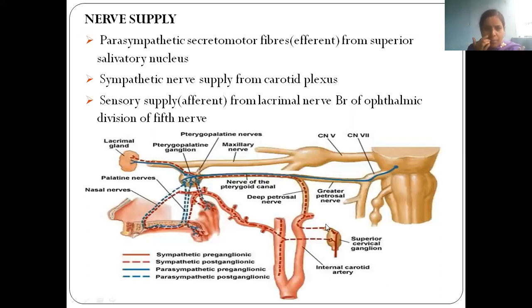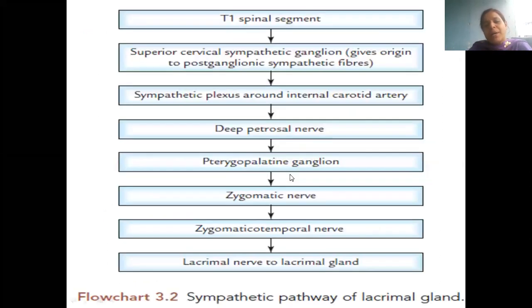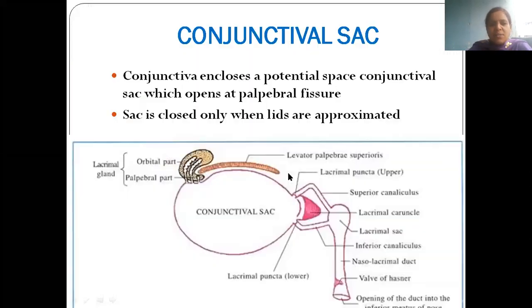For nerve supply, simply write: lacrimal nerve from the ophthalmic division of the trigeminal nerve. That is more than enough for this topic.